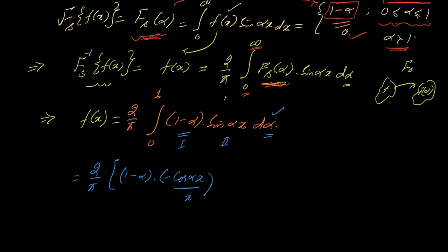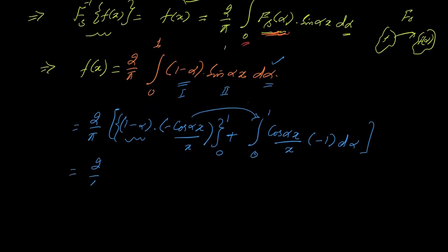It will be equal to 0 to 1, minus, minus minus plus because this integral - cos of alpha x over x into derivative of first one with respect to alpha is minus 1, and integral from 0 to 1. Now you can see the upper limit: when you put alpha as 1, 1 goes here so you get 0.